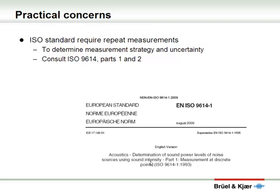If you are required to perform sound power determination according to the international standard ISO 9614, then you will need to adapt your measurement strategy in order to reduce the measurement uncertainty. The 2270 sound intensity meter will enable you to conform to all these standards.